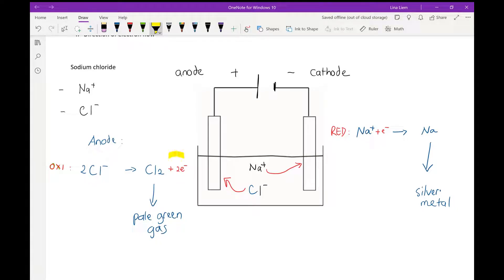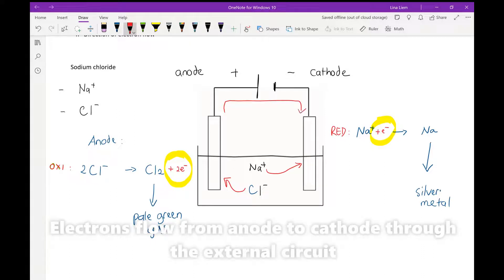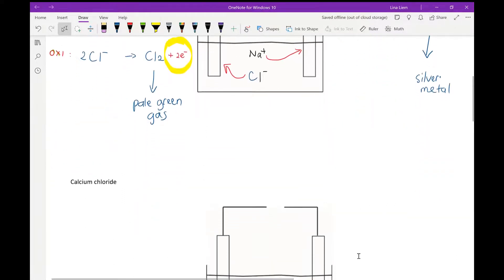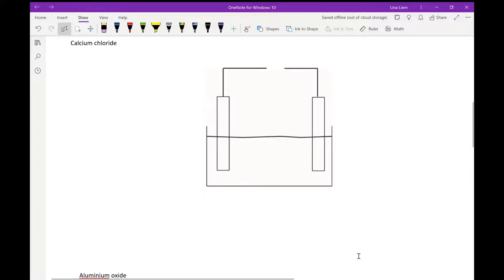The fourth one is the direction of the electron flow. As you can see here, electrons are produced on the anode and used on the cathode, so the direction of the electron is from anode to cathode. This is always the case in electrolysis. Electrons are transferred from the anode to the cathode.